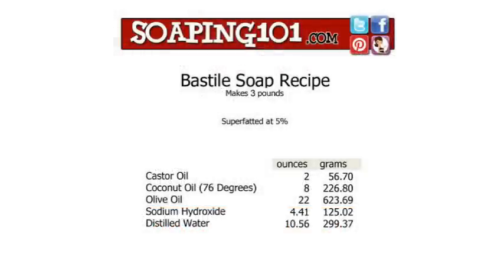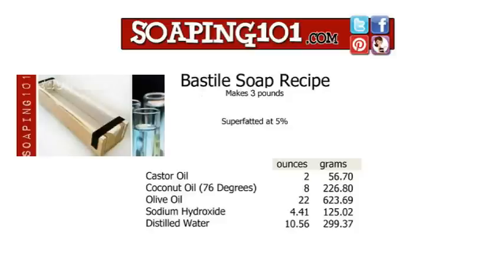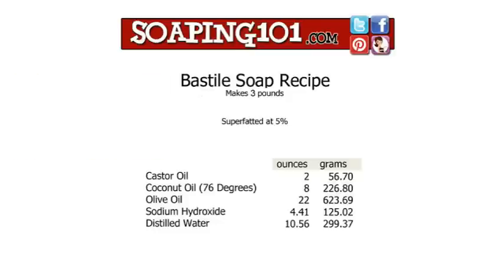Let's use a reliable recipe and scale it to fit a new mold. If you need to know how to determine your mold size, pause this video and review our soap making molds video. This is the basic tried-and-true Bastille recipe that we use for nearly all of our soap making videos. It is formulated to fit a 3-pound mold and is super-fatted at 5%. It consists of 2 ounces of castor oil, 8 ounces of coconut oil, and 22 ounces of olive oil, making for a 32-ounce oil blend.